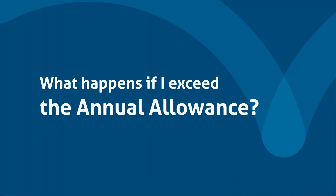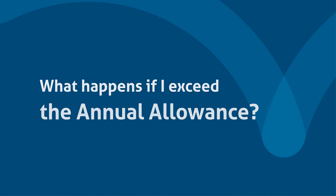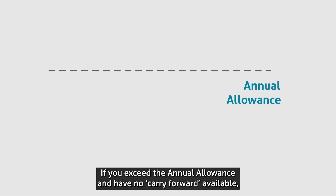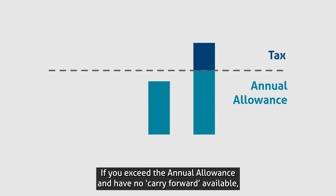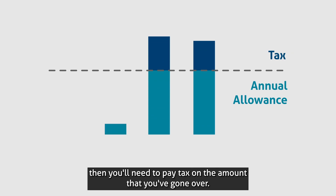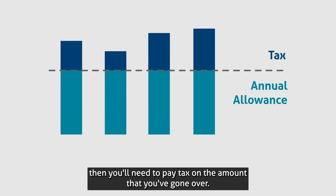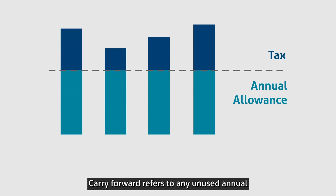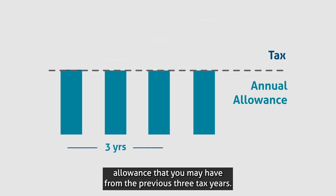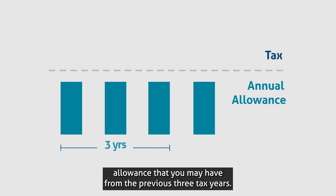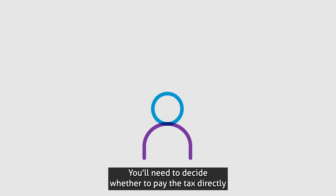What happens if I exceed the annual allowance? If you exceed the annual allowance and have no carry forward available, you'll need to pay tax on the amount that you've gone over. Carry forward refers to any unused annual allowance that you may have from the previous three tax years.